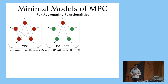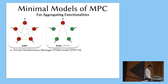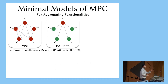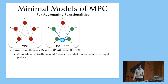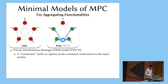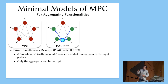Simple models of MPC for this kind of aggregating functionalities have been around for a while. One of the most influential works in this setting is by Feige, Kilian, and Naur from the 90s, who introduced a private simultaneous messages model. In this model, all the input players send a single message to the output player, which has to compute the output, but we also want security. For that, they allow a trusted party — a coordinator — who can a priori send some correlated randomness to the parties.